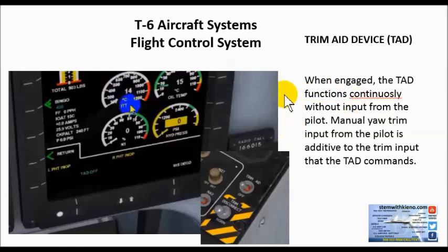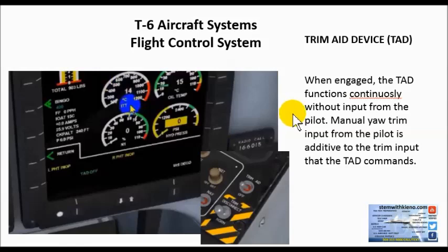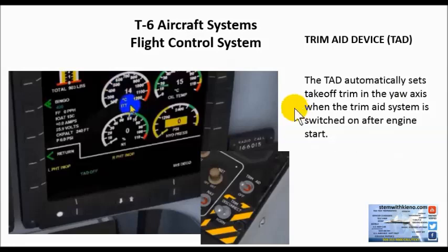When engaged, the TAD functions continuously without input from the pilot — it does its own thing. As you increase and decrease power on the PCL, it will try to reduce forces that are out of whack. Manual yaw trim input from the pilot is additive to the trim input that the TAD puts in. So it's automatically doing its thing, but you may want to include more trim, and it just helps you give extra control balance during different flight maneuvers.